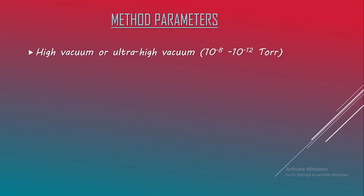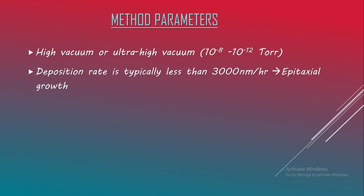MBE takes place in high vacuum or even ultra-high vacuum, with pressure ranging from 10⁻⁸ to 10⁻¹² Torr. The most important aspect is the deposition rate, which is typically less than 3000 nanometers per hour. This allows films to grow epitaxially - an orderly arrangement of atoms or molecules onto the substrate, with growth taking place layer by layer, atom by atom.